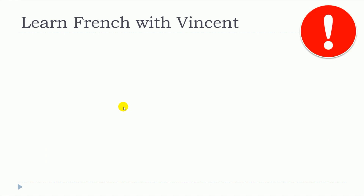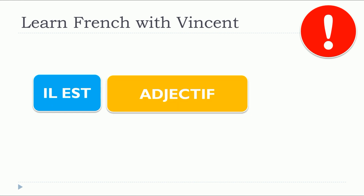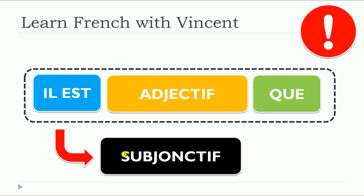The important thing that we need to remember is that we will structure our sentence in such a way. We will start with « il est ». Remember that in that case « il » will stand for « it » and not for « he ». Then we will put the adjective, then « que ». And after all that, we will introduce the subjonctif. So it means that the verbs that will come after this structure will be in the subjonctif.